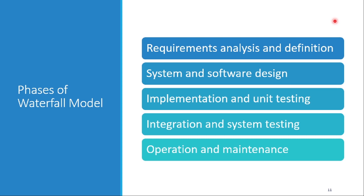Normally we use waterfall for traditional systems where requirements are known for years. For example, management systems have certain known requirements like CRUD operations — add, update, delete, and search. Few businesses have stable requirements running from decades, so they are sure about their requirements and there is no change. The waterfall model is mostly used for large system engineering where a system is developed at several different sites, to ensure everything is at a perfect level.